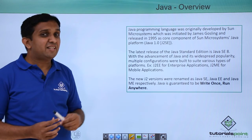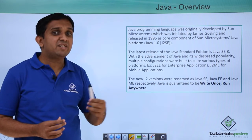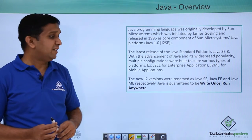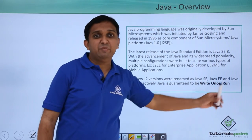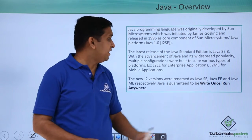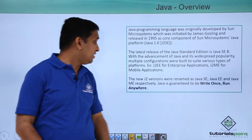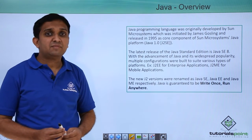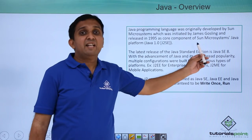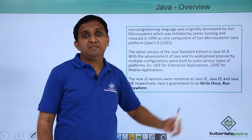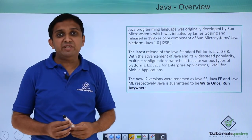These editions are renamed to newer versions later, correspondingly JSE, JEE and JME — meaning Java SE, Java EE and Java ME. The latest version of Java is Java 8, and for Java 8 we make use of JDK 8.0.